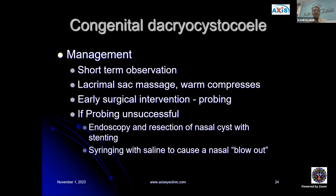For management of congenital dacryocystocele, in the short term one can observe, do lacrimal sac massage, or warm compresses. Early surgical intervention includes probing. If probing is unsuccessful, one can proceed with endoscopy and resect the nasal cyst with a stent, or syringe with saline to cause a nasal blowout of the dacryocystocele.